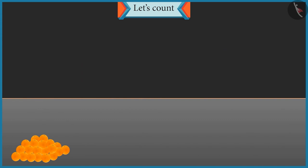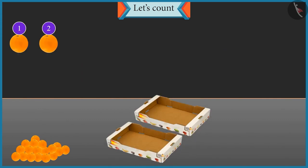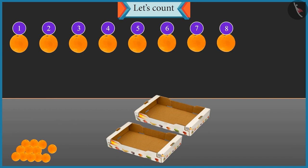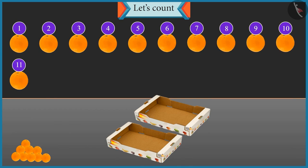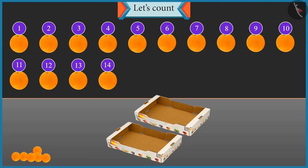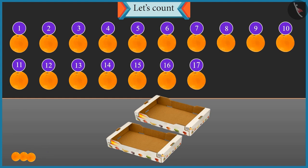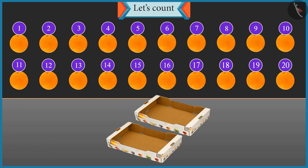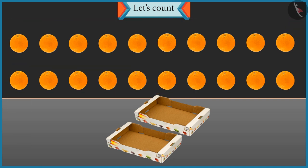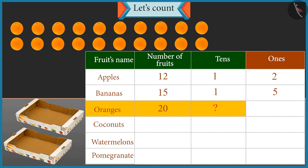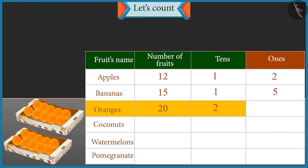Now let's count these oranges and paste them in the box. One, two, three, four, five, six, seven, eight, nine, ten, eleven, twelve, thirteen, fourteen, fifteen, sixteen, seventeen, eighteen, nineteen and twenty. There are twenty oranges. Now tell me, how many tens are there in twenty? With twenty oranges, two groups of ten will be formed, so there are two tens. And how many ones are there in twenty? There are no oranges left, so the number of ones is zero.